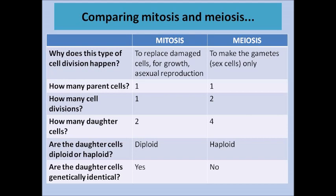When the chromosomes line up along the centre of the cell, the arms of the chromosomes can do what we call crossing over: little sections of DNA cross over from one chromosome arm to the other, meaning no sperm or egg will ever be genetically identical. This obviously causes variation within our population, so it's very important.